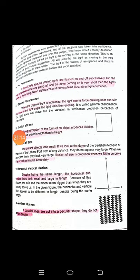Moving films on TV are also an example of phi phenomena. When characters appear to be moving on screen, what actually happens is that numerous images from different angles are captured and played in a specific sequence, creating the impression of movement. There is no actual movement in the individual pictures. This phenomenon — where lights going on and off with a very small gap create perceived movement — is called phi phenomena, and it is a commonly observed phenomenon.